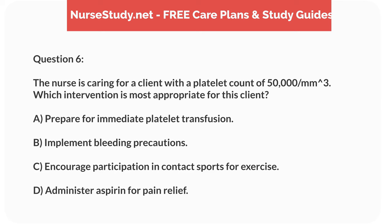Question 6. The nurse is caring for a client with a platelet count of 50,000. Which intervention is most appropriate for this client? a. Prepare for immediate platelet transfusion. b. Implement bleeding precautions. c. Encourage participation in contact sports for exercise. d. Administer aspirin for pain relief.